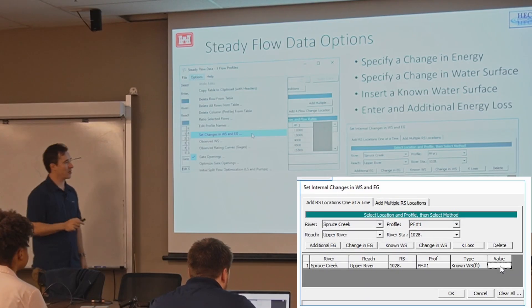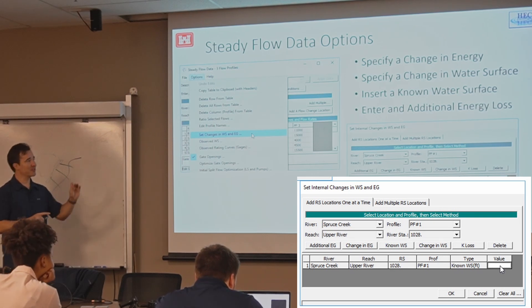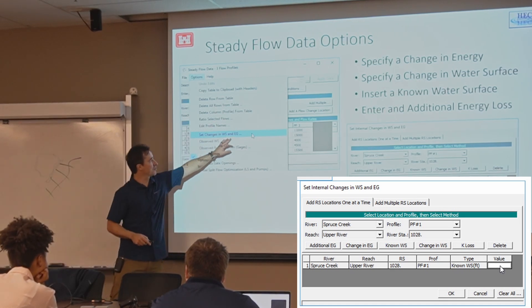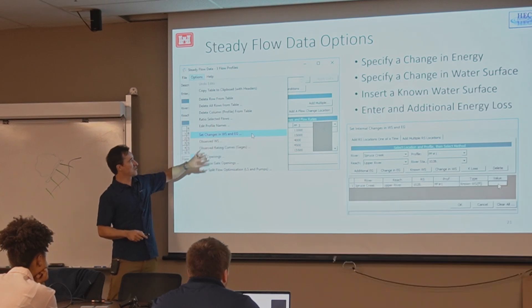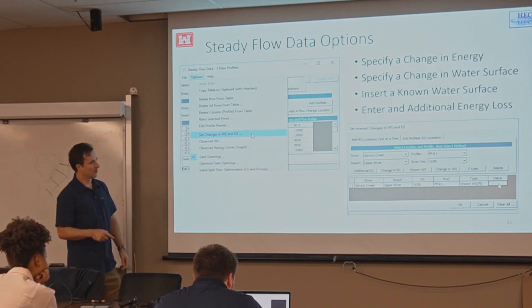At any cross-section, you can specify, this is when you're really refining your model and you're tweaking your results. You can specify a change in energy, a change in water surface. You can specify a known water surface or enter an additional energy loss. You think there's additional losses that you're not capturing in your model, you can add them in this editor here. So this says changes in water surface and energy grade. It's not just changes, it's actually the values as well. So you can specify the water surface, not just the change in water surface there. That's how you do it with this option.